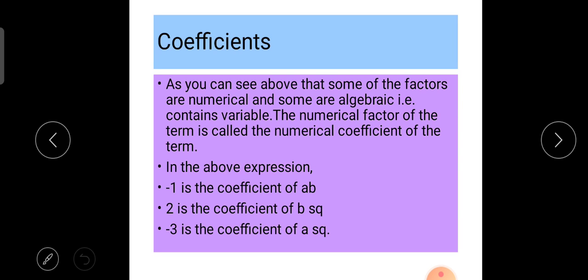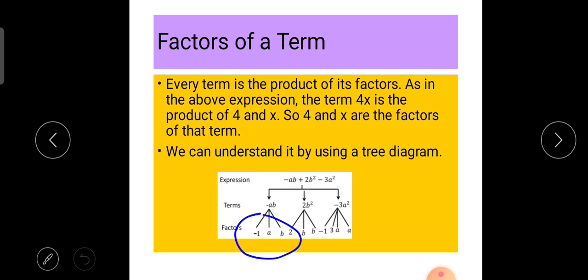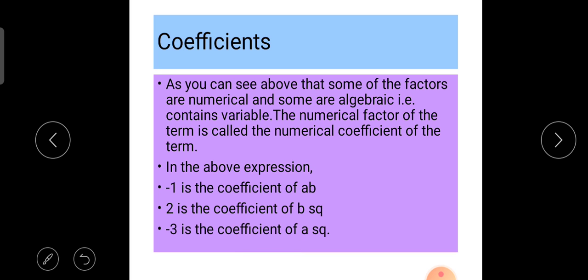Coefficient: As you can see above, some of the factors are numerical and some are algebraic, containing variables. For example, here -1 is numerical and a and b are algebraic. In the first term -ab, there are three factors: -1, a, and b. The numerical factor of the term is called the numerical coefficient, meaning -1 is a numerical coefficient.